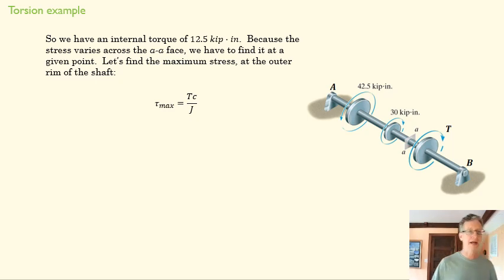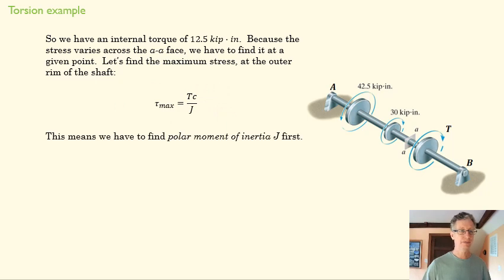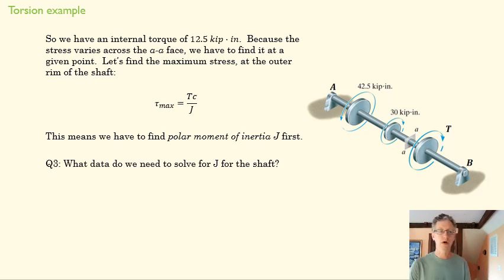Now we want to find the maximum stress at the outer rim of the shaft. So that's going to be at C because of the way that stress increases linearly as we move out towards the edge of a circular shaft. So here's our torsional stress equation. We need to find the polar moment of inertia and think about what data we need to solve for J. What is J a function of?